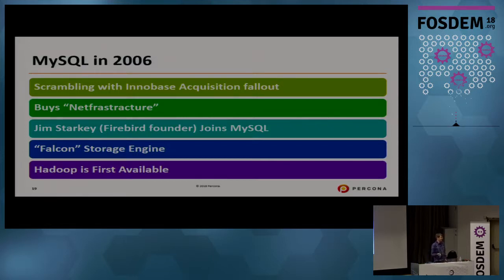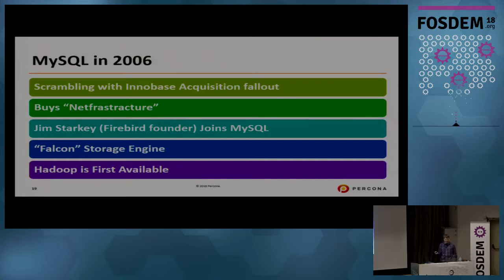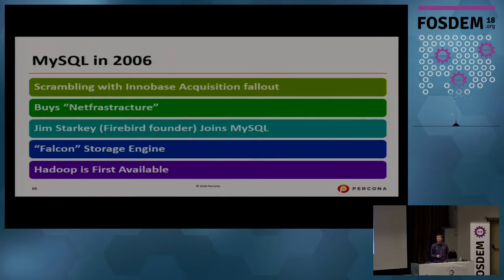In 2006, the InnoDB acquisition by Oracle meant that by 2006 most large-scale MySQL users were using InnoDB as their storage engine. MySQL responded by buying a company called Netfrastructure, and Jim Starkey — the Firebird founder — joined MySQL to implement the Falcon storage engine, which was supposed to be a much better replacement for InnoDB. Anybody remember Falcon? Yes, some heroes in the audience.